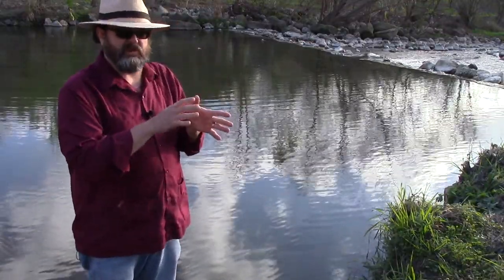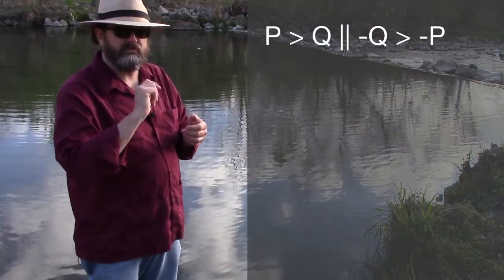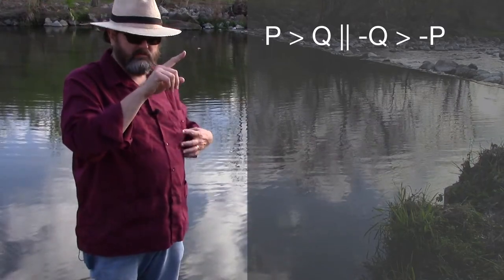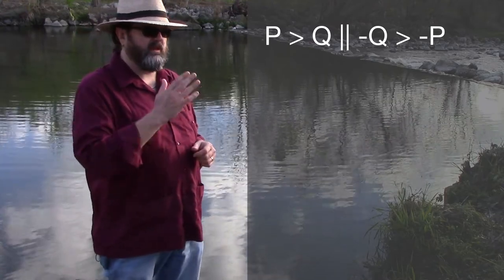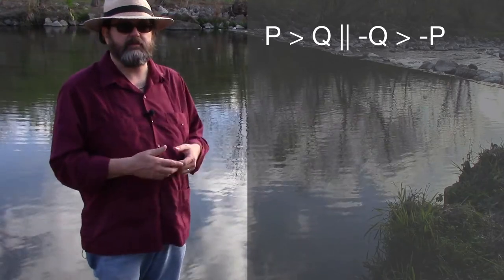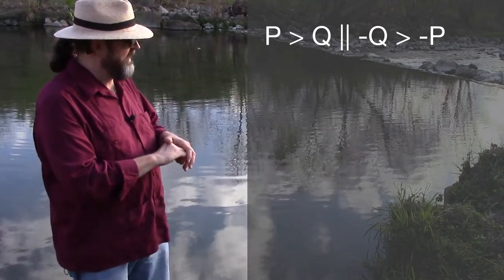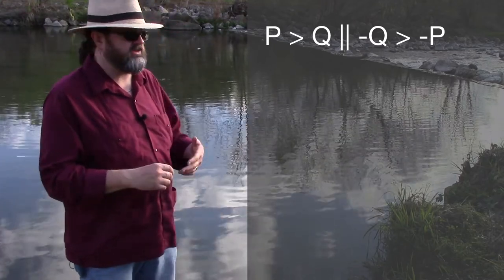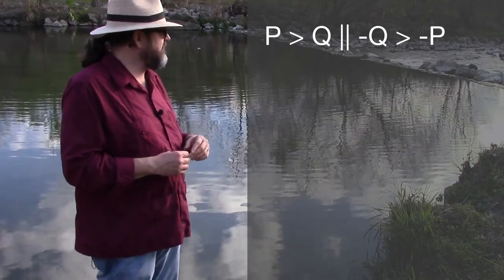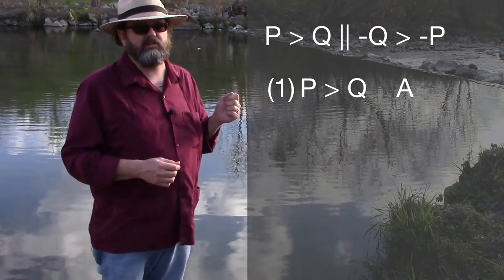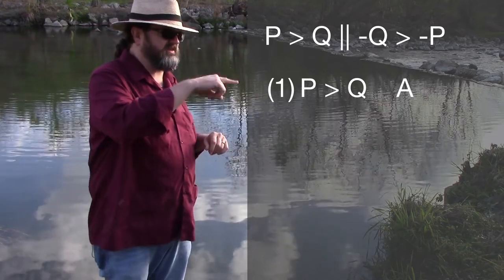Here's what the sequence looks like: p greater-than-symbol q, double vertical line, not-q greater-than-symbol not-p. If p then q, therefore if not-q then not-p. Starting the argument following rule 10, we put our sequence at the top. Rule 11, we number our premises. Rule 12, we have our single premise p greater-than-symbol q placed there with citation A — that tells us it's our premise.